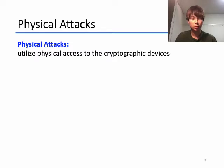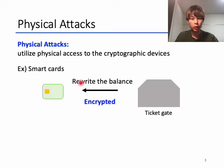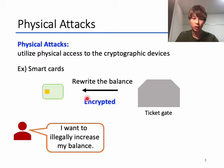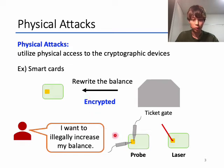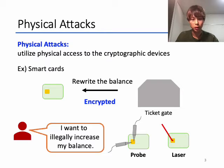Physical attacks utilize physical access to cryptographic devices. When we rewrite the balance of smart cards, the message from the ticket gate is encrypted to prevent illegal rewriting. But if someone tried to increase the balance illegally, the attacker can use probes or lasers to access the cryptographic devices. So it is important to consider the security of cryptosystems in situations where the attacker can access the devices physically.